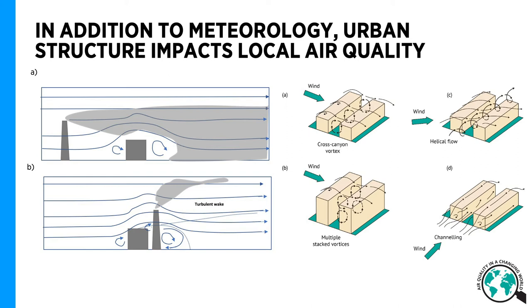From the right-hand side, you can see how the orientation of the street canyon will impact on the flow field in an urban area. If the wind is coming perpendicular to a street canyon, so-called street canyon vortices will be formed, and these vortices can transport pollutant emissions taking place at the ground level to higher elevations in the street canyon.